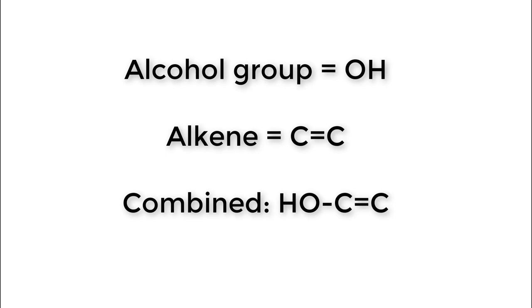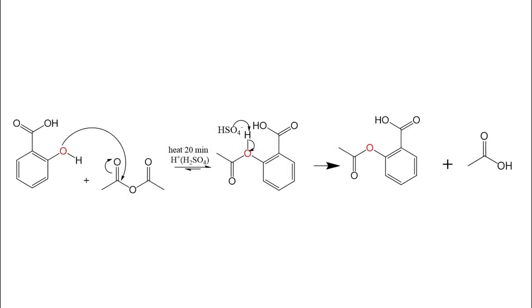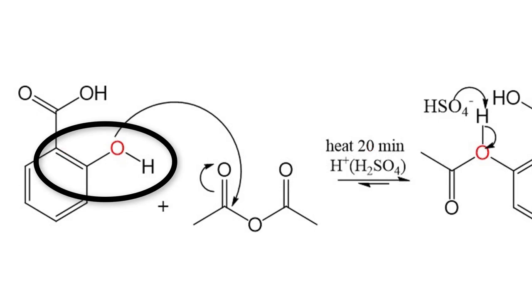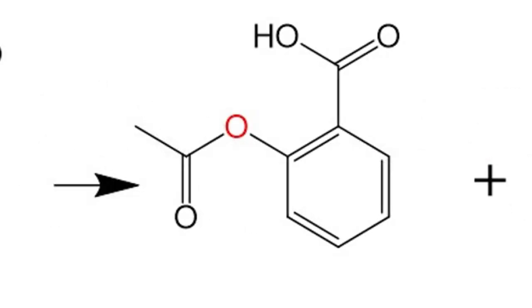An enol is a functional group that combines an alcohol and an alkene. A positive test would give a purple color for an enol. If we look back at our structures for our products and reactants, we can see that we have this functional group on salicylic acid but not on aspirin.